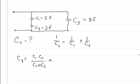So here we have C1 and C2. That's 2 times 2 over 2 plus 2. So this is just equal to 1 farad. So the capacitance in this branch right here is just 1.